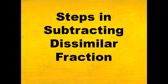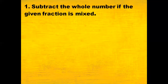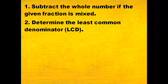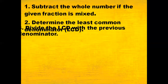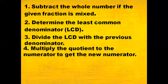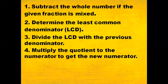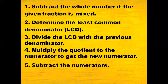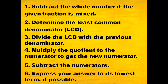What are the steps in subtracting dissimilar fractions? Step 1: subtract the whole number if the given fraction is mixed. Step 2: determine the least common denominator or LCD. Step 3: divide the LCD by the previous denominator. Step 4: multiply the quotient by the numerator to get the new numerator. Step 5: subtract the numerators. Step 6: express your answer in its lowest term if possible.